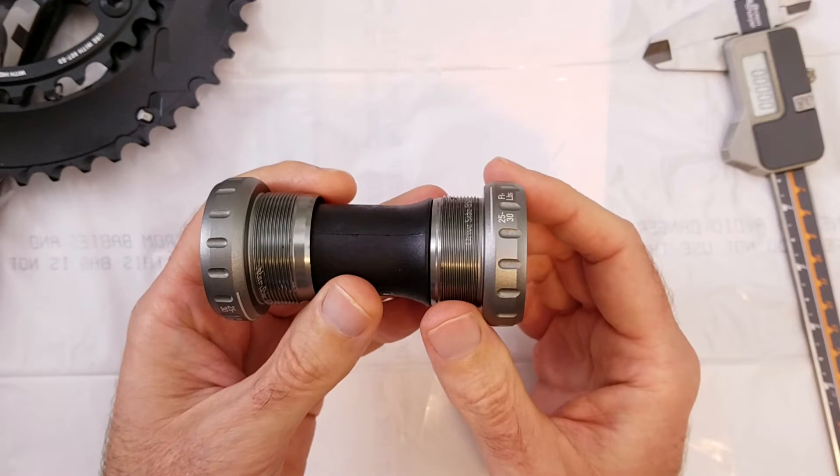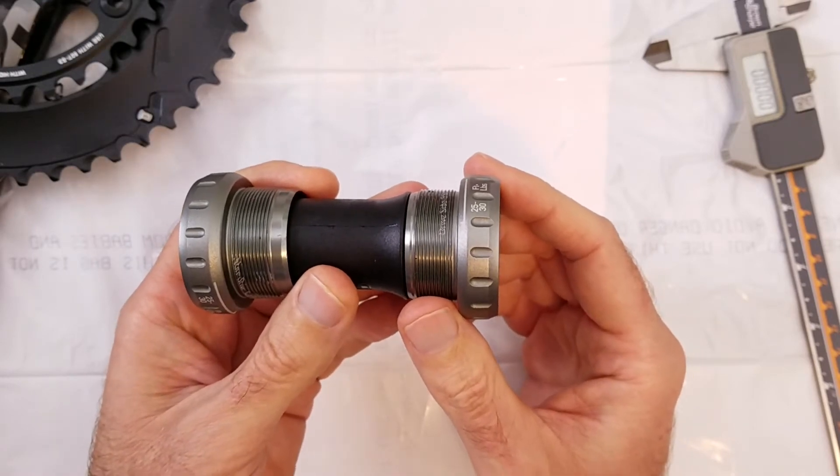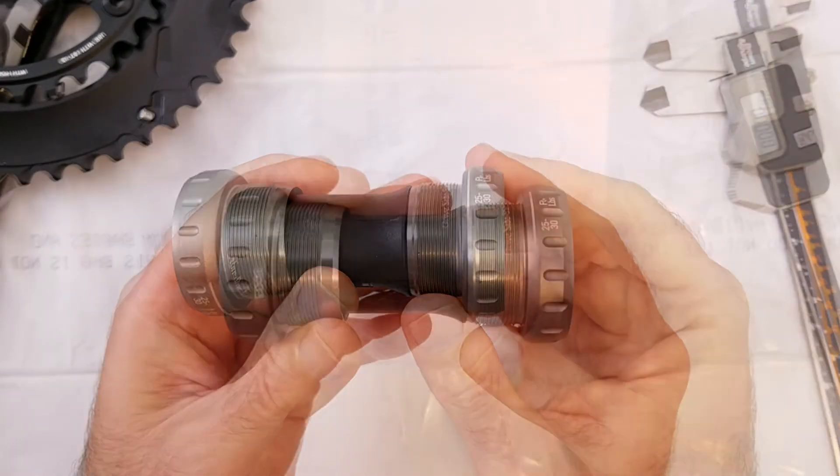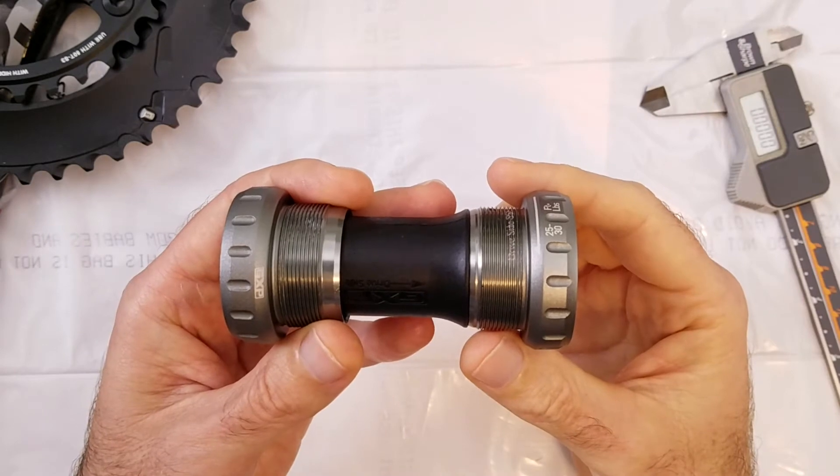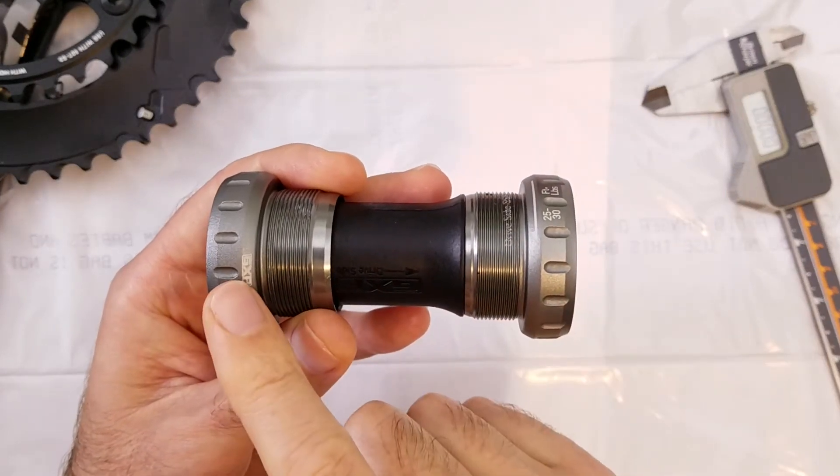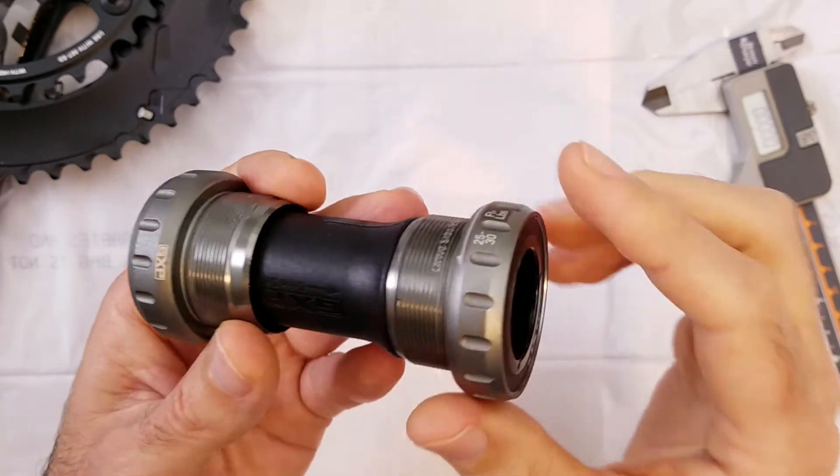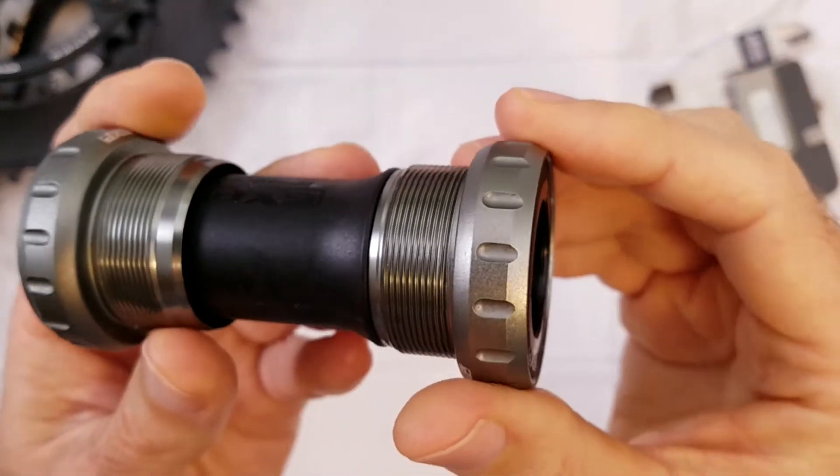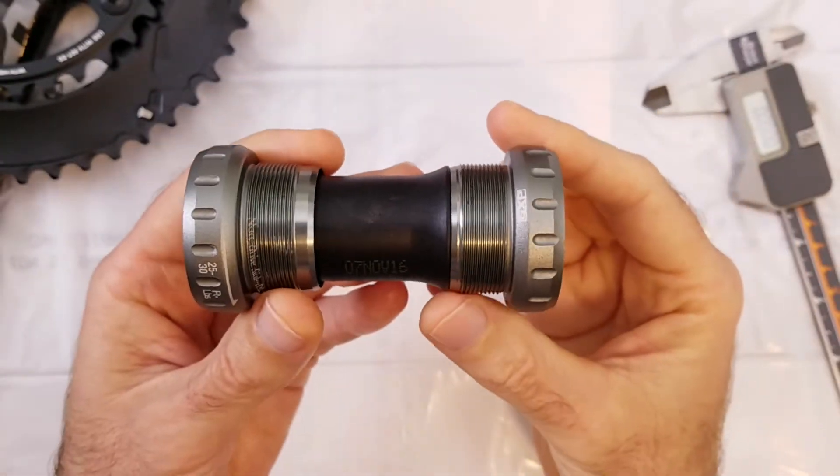And by the way, drive side refers to the side with the chain ring on it. The outside diameter of both the drive side cup and the non-drive side cup are 44mm and they have 16 notches in them to facilitate tightening and loosening.